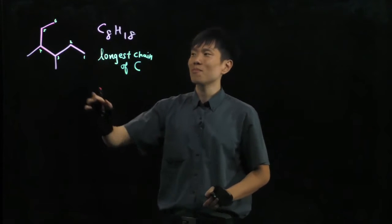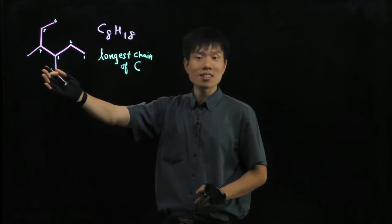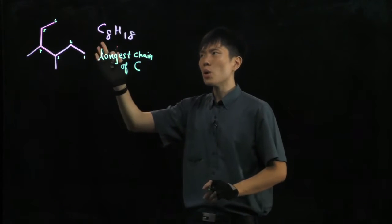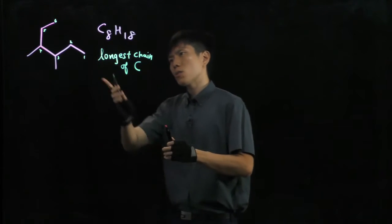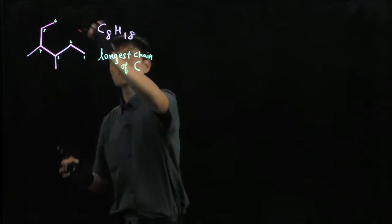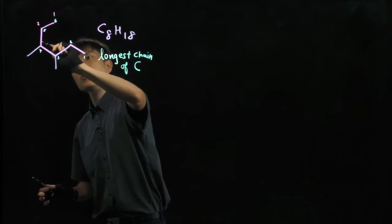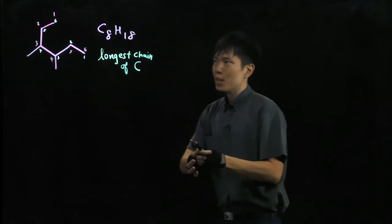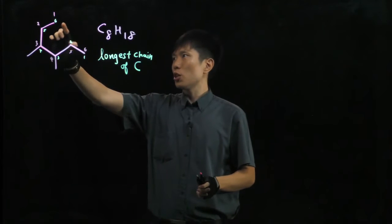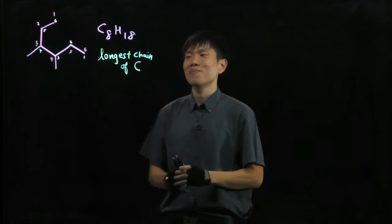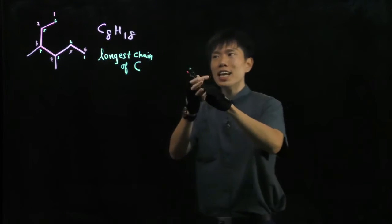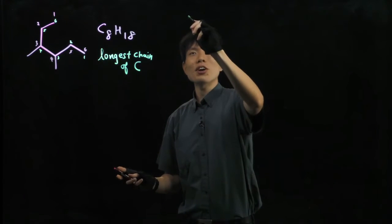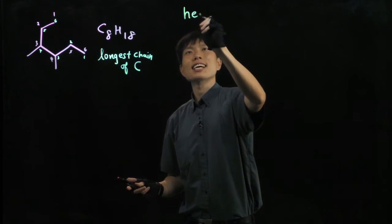So do we take it this way? Could we have another one that's longer than 6? You try it? Impossible. But wait. Can't we start from the other side? We label 1, 2, 3, 4, 5, 6. Yup, we can do that. So the longest chain is still 6 no matter what.